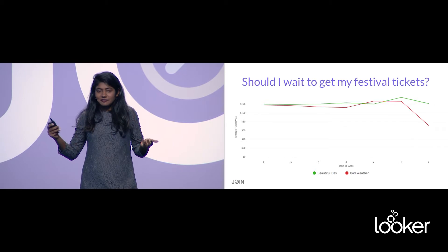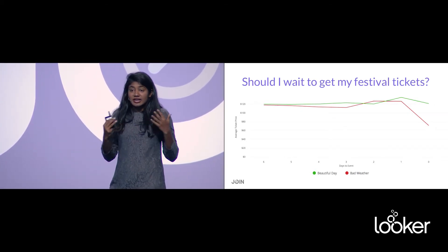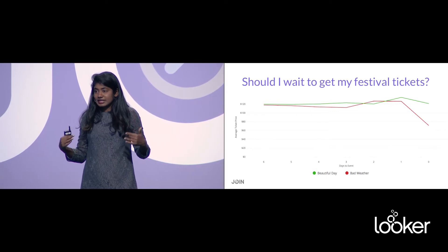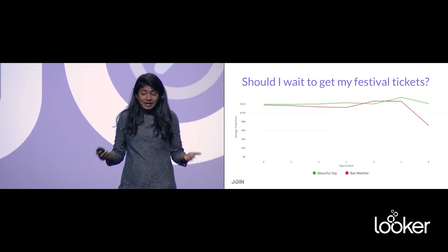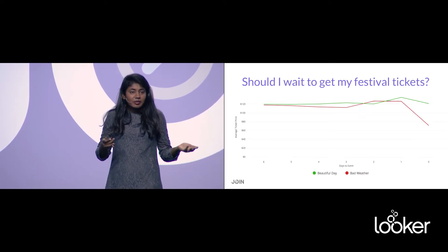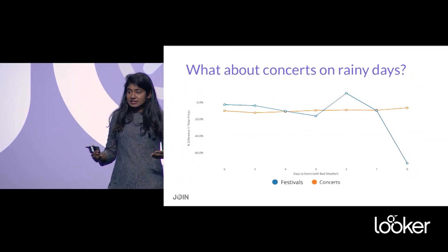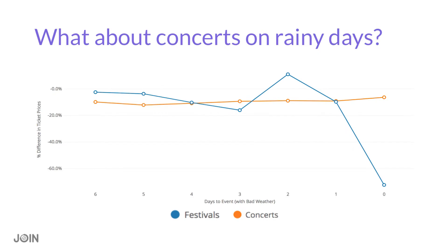How did this affect the pricing? We found that pricing tended to go down for festivals as you approached the day of the event. On the actual day of the event, pricing tended to fall drastically — about 60%. What about other events, like concerts or sports games? We looked at concert events compared to festivals and found that concerts are inside, so the price tended to stay about the same in the days leading up to the event, whereas for festivals you see a clear drop — prices fall about 60% on average.